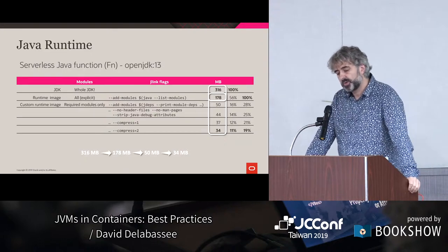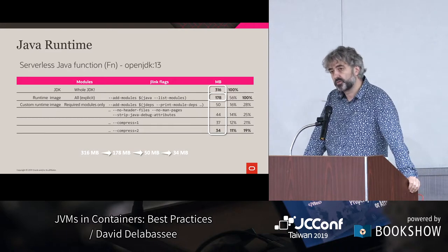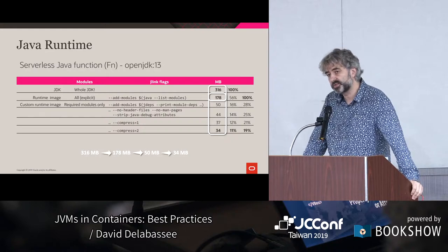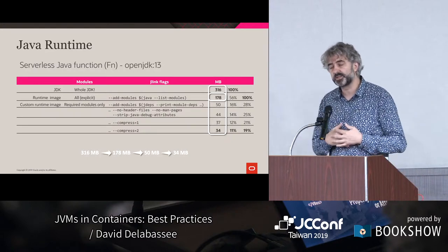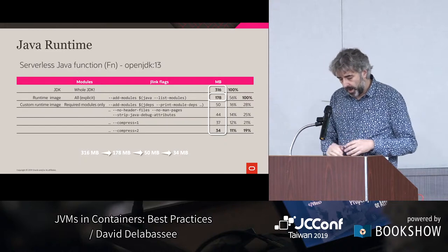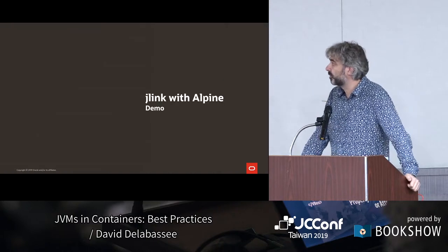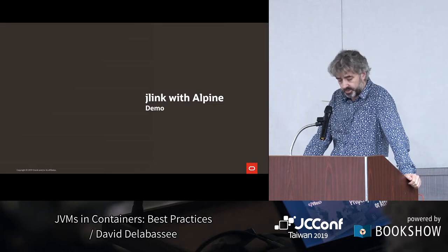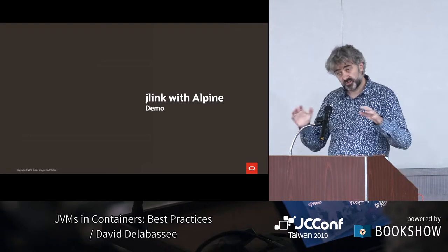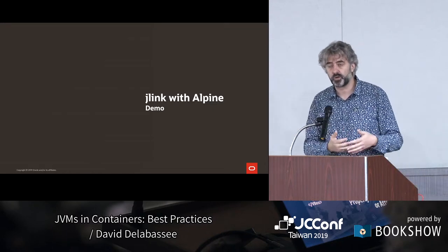At the Java runtime layer, we can try to reduce that layer as much as we can. In Java 9, we introduced modularity within the Java platform, and one of the things modularity provides is J-Link. J-Link is a tool that is part of the platform that gives you the ability to create a custom runtime containing only the modules your application code needs. Starting from a full-blown OpenJDK 13, it weighs almost 320 megabytes — that's just the JDK with the JRE, which is quite a lot for running a simple application.